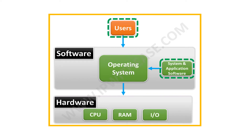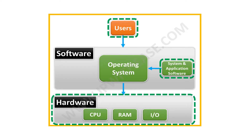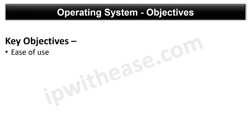Before we move further, let's quickly grasp the key objectives of an operating system. First is ease of use. The interaction between the operating system and user shouldn't require highly skilled resources to use the operating system. One example is the GUI interface of an operating system, which makes it easy for users to interact with the computer, unlike CLI, which requires more effort and high skill.